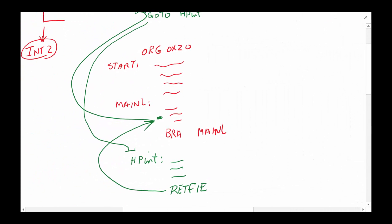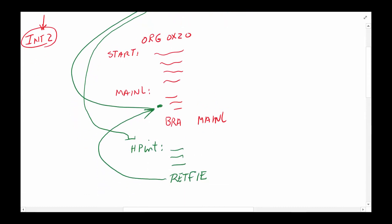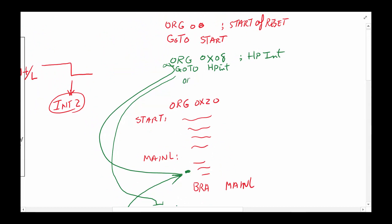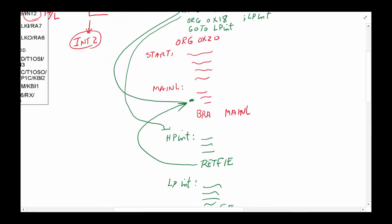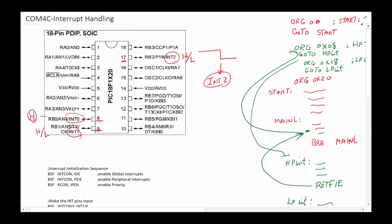So an interrupt happens, you go to org 0x08, jump into the interrupt processing routine, do the activities you need to do, and then return from interrupt — and you're done. That's a high priority interrupt. For a low priority interrupt, it simply jumps to org 0x18. Hopefully you'll have another set of routines to handle whatever happens in low priority interrupts. You handle the interrupt, say return from interrupt, and that takes you back to where the interrupt occurred. That's a broad overview of how interrupts work.